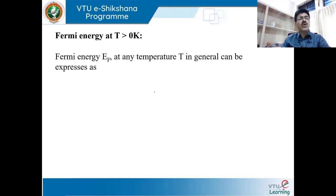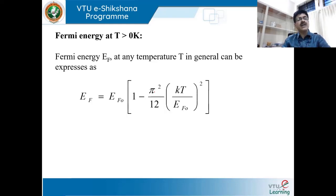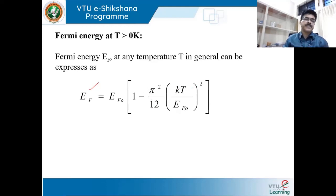Now let us find whether Fermi energy depends on temperature. The Fermi energy at any given temperature is given by the expression: EF = EF0 × [1 − (π²/12) × (kT/EF0)²]. This derived expression shows that EF, the energy at any given temperature, equals EF0 (the energy at 0 Kelvin) multiplied by a correction factor containing temperature T.